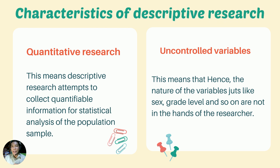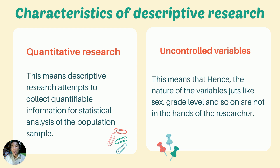There are characteristics of a good descriptive research. The first is that it is quantitative research. This means that descriptive research attempts to collect quantifiable information for statistical analysis of the population sample — it needs numbers and controlled variables. The nature of the variables, like sex, grade level, and so on, are not in the hands of the researcher, meaning researchers have no control over the variables.